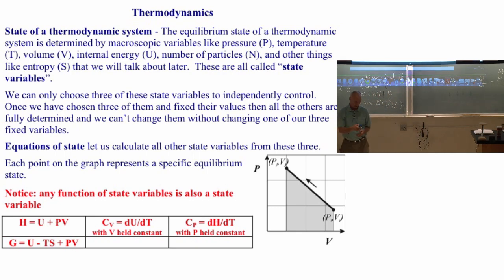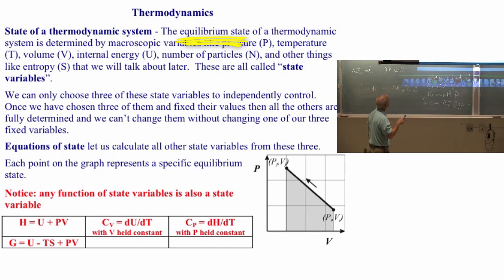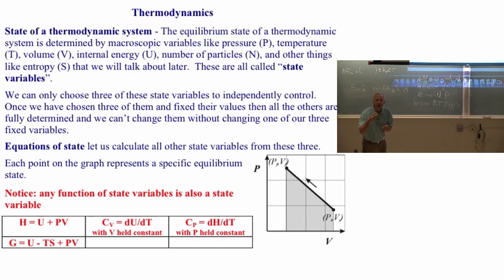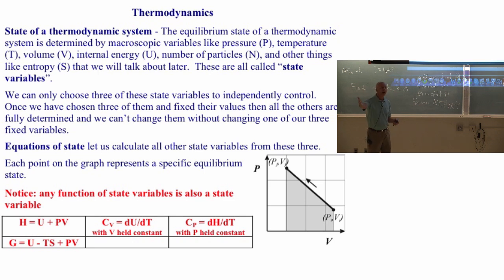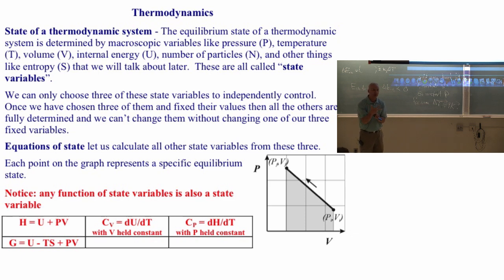This is a statement about equilibrium states: the equilibrium state of a thermodynamic system is determined by all of these state variables, but you generally only need to name three of them. For a pure system — suppose the air in this room were pure nitrogen — I'd only need to give you three variables to fix the state: pressure (one atmosphere), temperature (300 Kelvin), and number of moles of molecules. Once I tell you those three things, nothing else needs to be discussed. If you know pressure, temperature, and number of molecules, you know other things like volume.